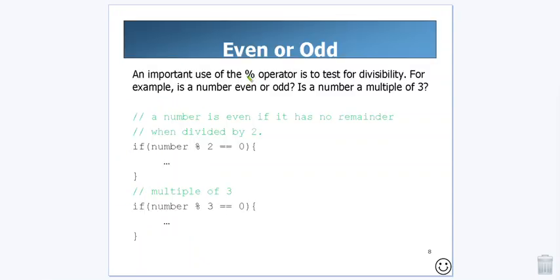Another way that it's used is to determine evenness or oddness of a number or if a number is a multiple of another number. Now, if a number is even, that means it divides evenly by two. Well, if it divides evenly by two, that means there is no remainder when I divide by two.